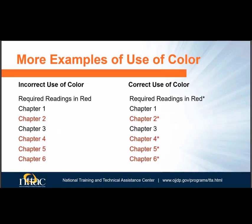Here is another example of using color to convey information. In the example on the left, the required readings are only identified by the color red, whereas on the right, an asterisk has been added to identify required chapters. Asterisks are often used when indicating required form fields. Someone who cannot distinguish colors can see that chapters 2, 4, 5, and 6 are required because they also include asterisks.